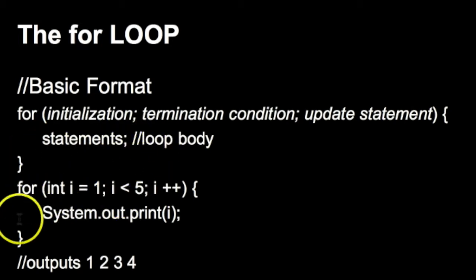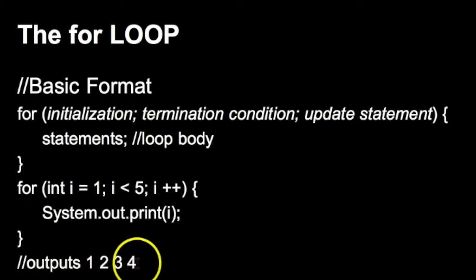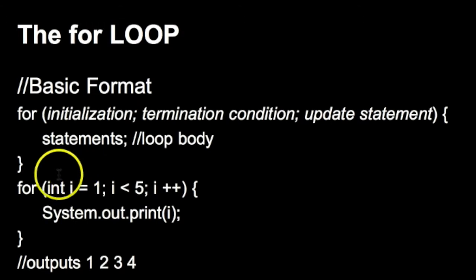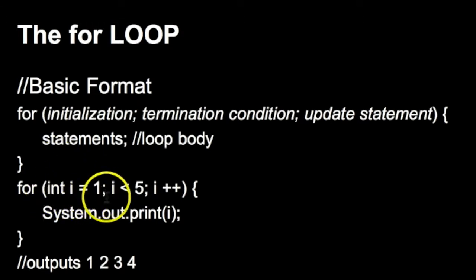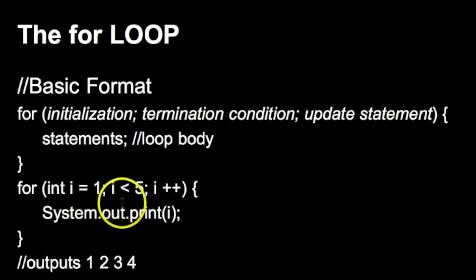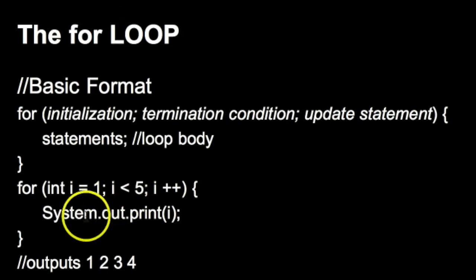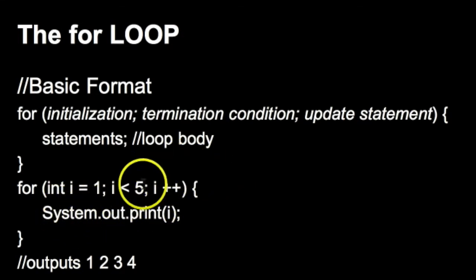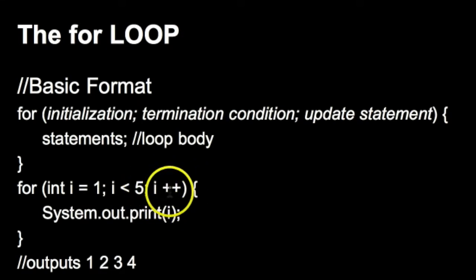I provided a really basic example of a for loop that prints out 1, 2, 3, 4. Here's the logic behind it. In our initialization, we initialize an int called i and set it equal to one. Then we say i is less than five, which is our termination condition. So when i reaches five, this for loop is going to terminate. And then we have our update statement, which uses an increment operator that increments i by one every time.